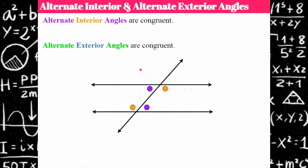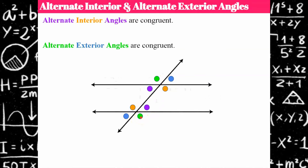We also have alternate exterior angles, and they are also congruent. These are on alternate sides of the transversal and on the exterior — outside of the parallel lines. There's one more pair: also on alternate sides of the transversal and on the exterior of the parallel lines, and they are congruent.